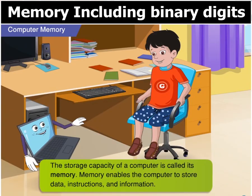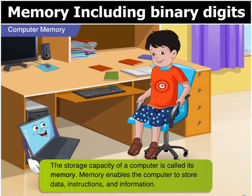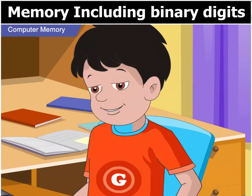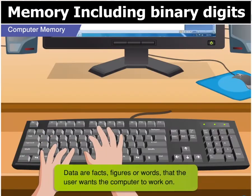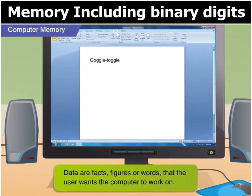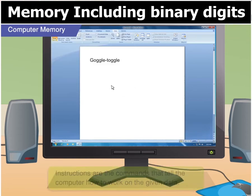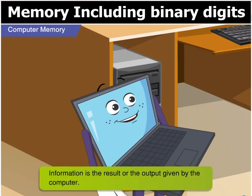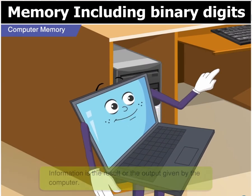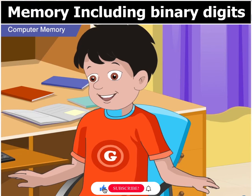The storage capacity of a computer is called its memory. Memory enables the computer to store data, instructions and information. Data are facts, figures or words that we want the computer to work on. Instructions are the commands that tell the computer how to work on the given data. Information is the result or the output given by the computer. Ok, got that. So far so good.